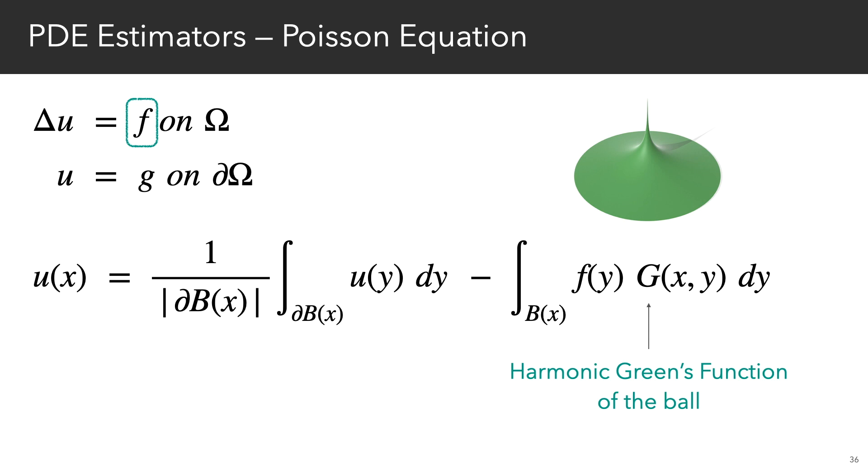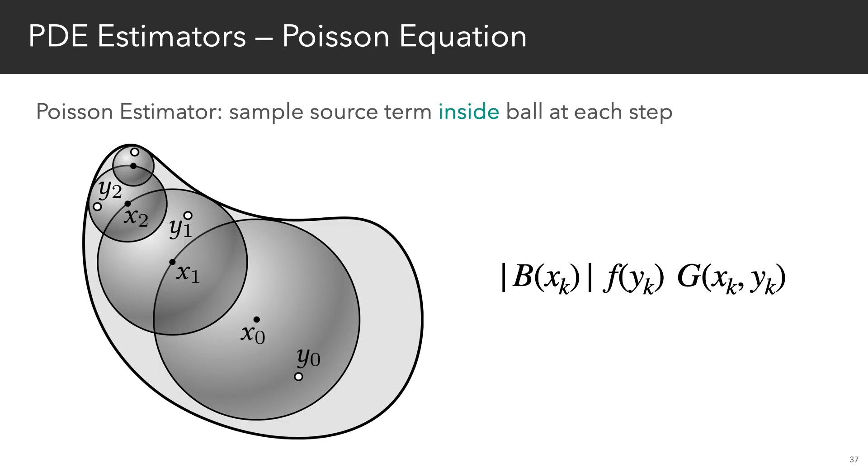Here, g is the harmonic greens function of the ball, and basically it represents where on average inside a ball you're likely to find a random walk starting from the center. From an algorithmic perspective, now at each step, we must pick a random point inside the ball and evaluate the source term times the greens function, which gets added to the Laplace estimator.